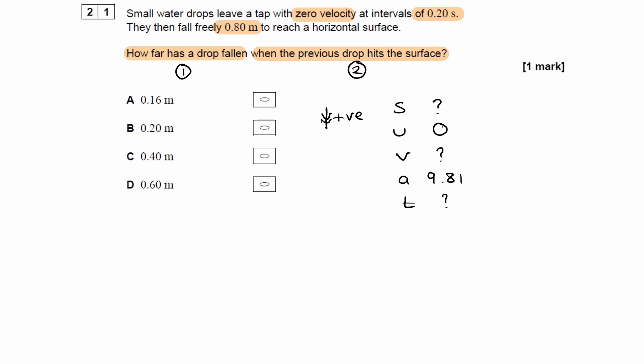So let's see if we can work out either v or t in order to then work out what s is by considering this scenario. Let's draw a diagram. Here's the tap. We're told that the previous drop hits the surface. So here is drop two, and let's say that drop one is somewhere over here. We're trying to work out what this distance here is from the tap to drop one. And we know that drop two is a distance of 0.8 meters from the ground. We also know the time interval between drops is 0.2 seconds.